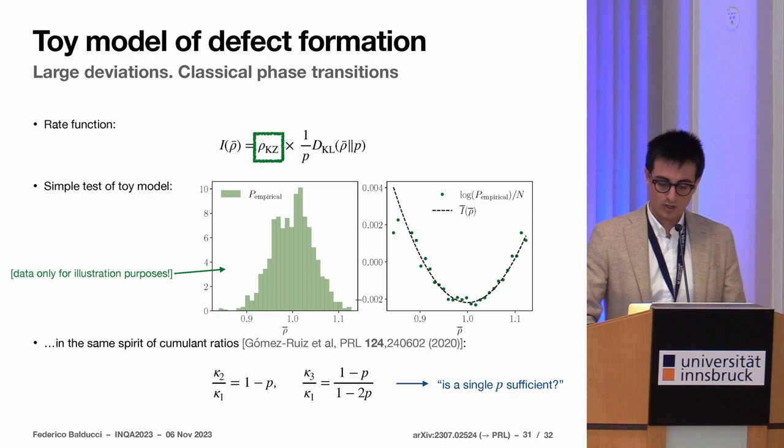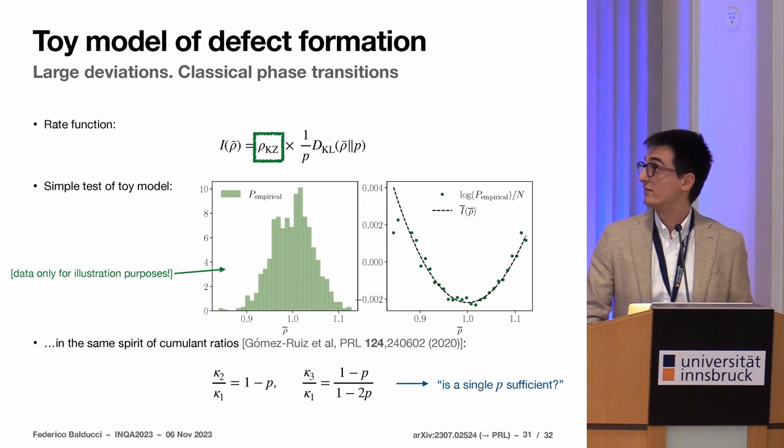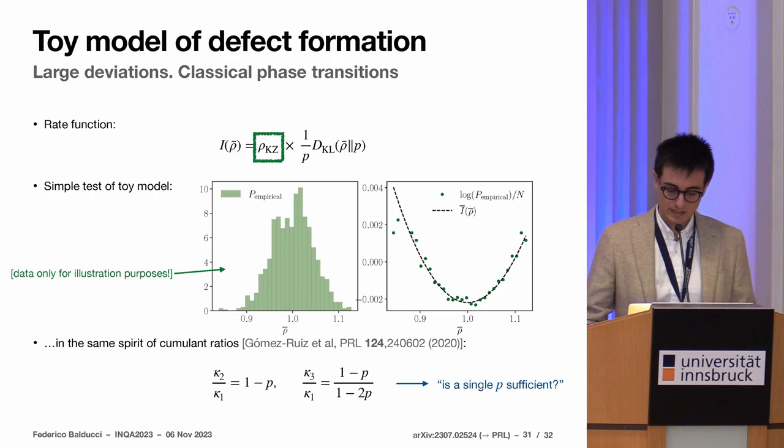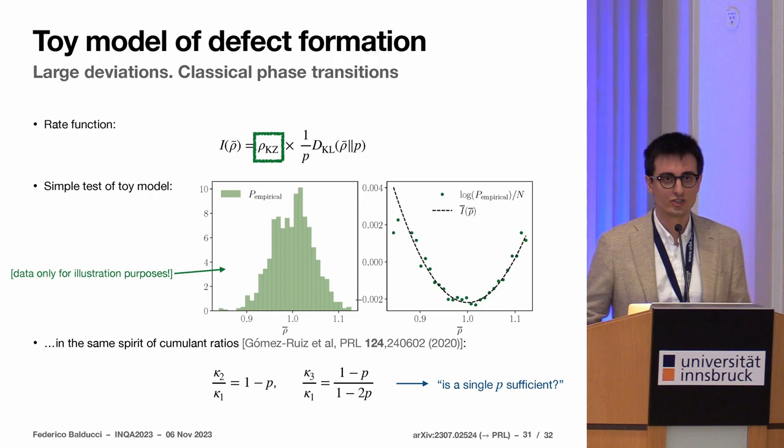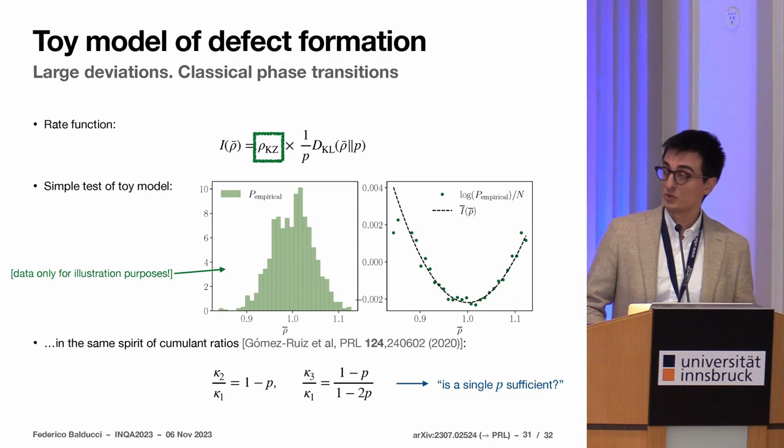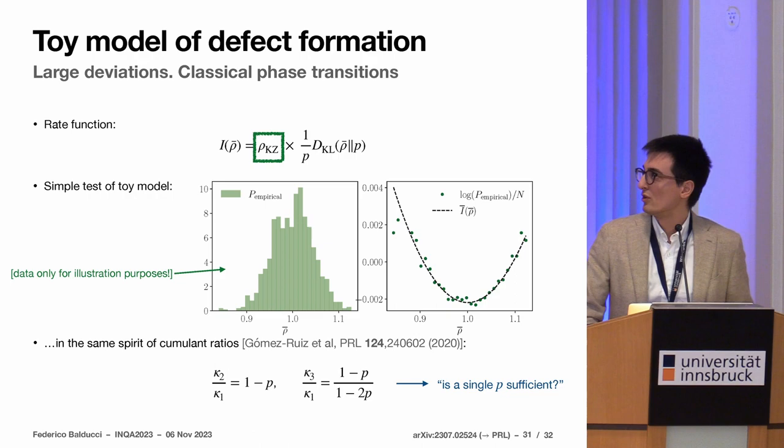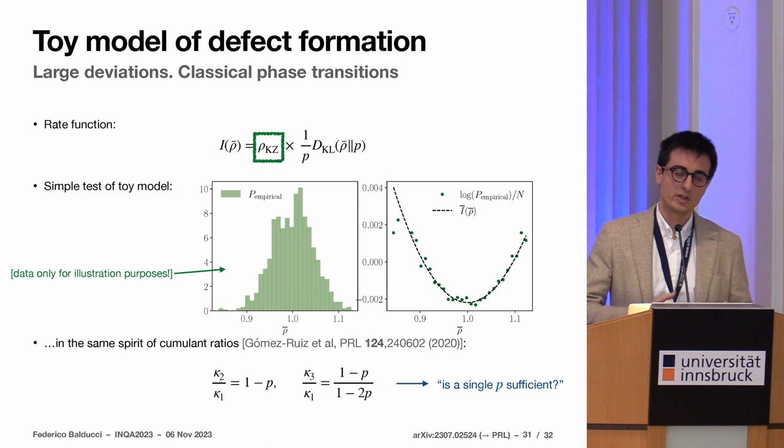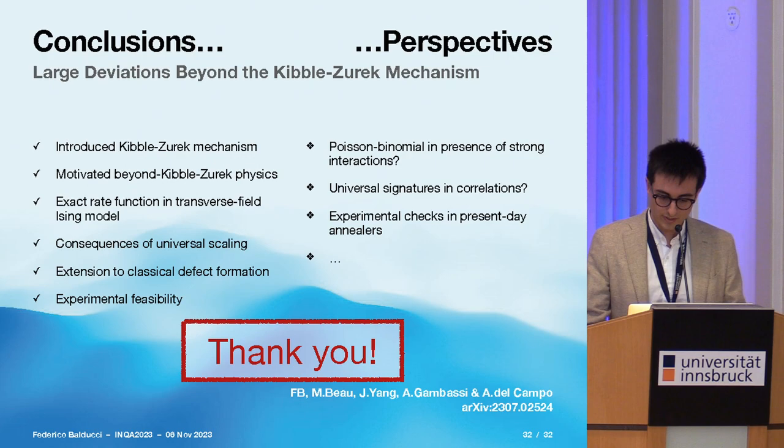What one can do practically in an experiment? One can plot the logarithm of the probability distribution and quantify how much it deviates from the simple prediction which is the Poisson binomial distribution, because that would highlight, for example, how much defects interact, what is there beyond the Kibble-Zurek mechanism in a real platform. This is why we are stressing that this large deviation theory provides a unified framework, because if you instead look at cumulants, what you can do is try to fit them with some empirical formula, but here you really stare at what is the full probability distribution of the defects, and so you can argue what is the mechanism behind that generates them.